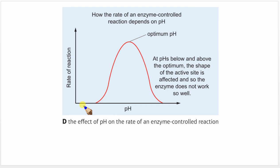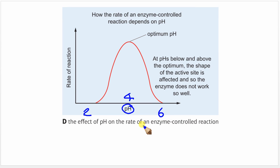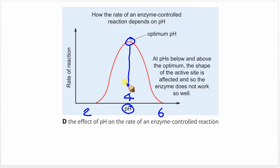Here's a typical graph looking at pH on the x-axis. We have a low pH — say pH 2 here, pH 4 here, and pH 6 here. On the y-axis we have rate of reaction — how quickly the substrate is acted upon. We can see that as pH increases, the rate of reaction increases until we get to an optimum. This is the optimum pH for this particular enzyme.